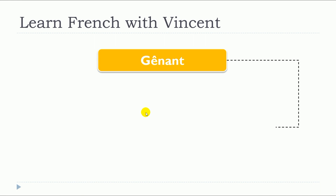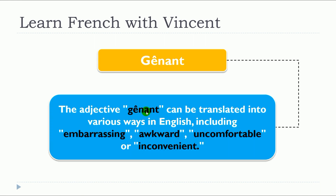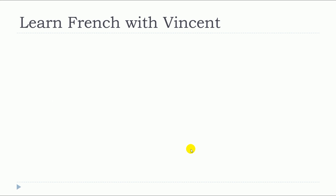So, this lesson is about gênant. The adjective gênant can be translated in various ways in English, including embarrassing, awkward, uncomfortable, or inconvenient.